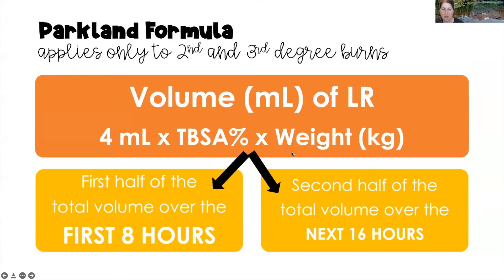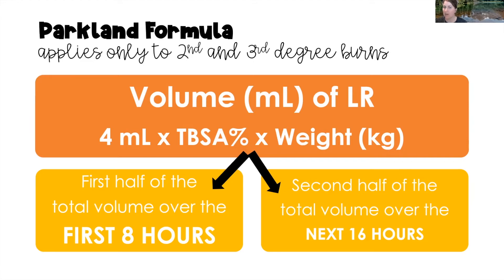Now let's talk about the Parkland formula, which applies only to second and third degree burns. To calculate the total volume to administer in 24 hours, you take the number four, multiply it by the total body surface area burned (already determined using the rule of nines), and then multiply that by the client's weight in kilograms. We then give exactly one half of that total volume in the first eight hours, and the second half in the next 16 hours.